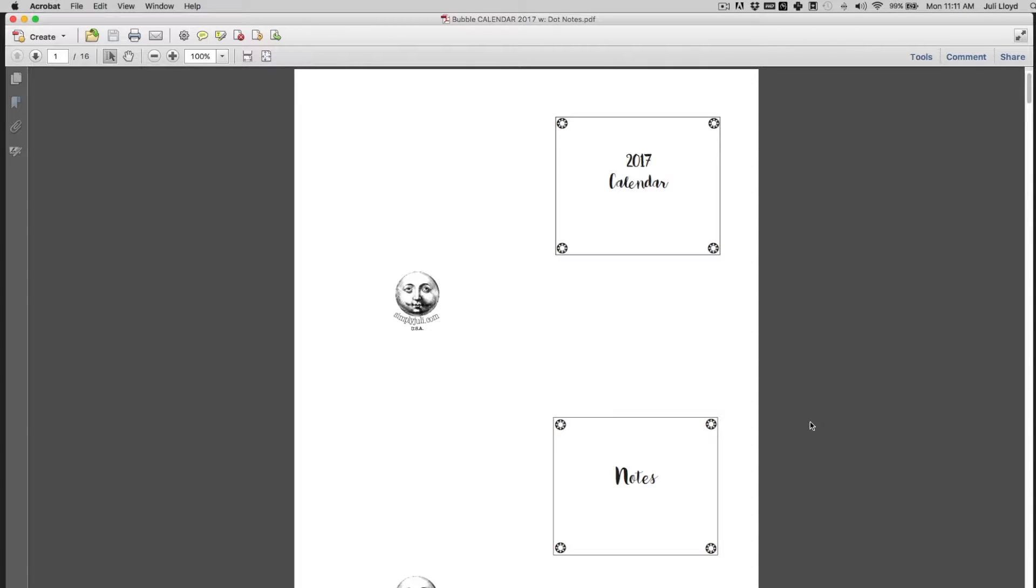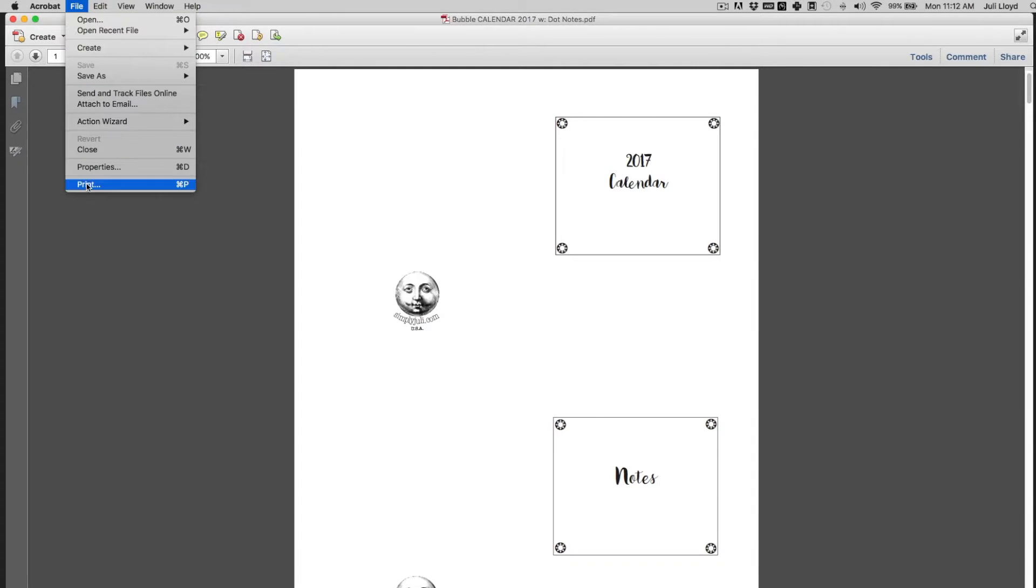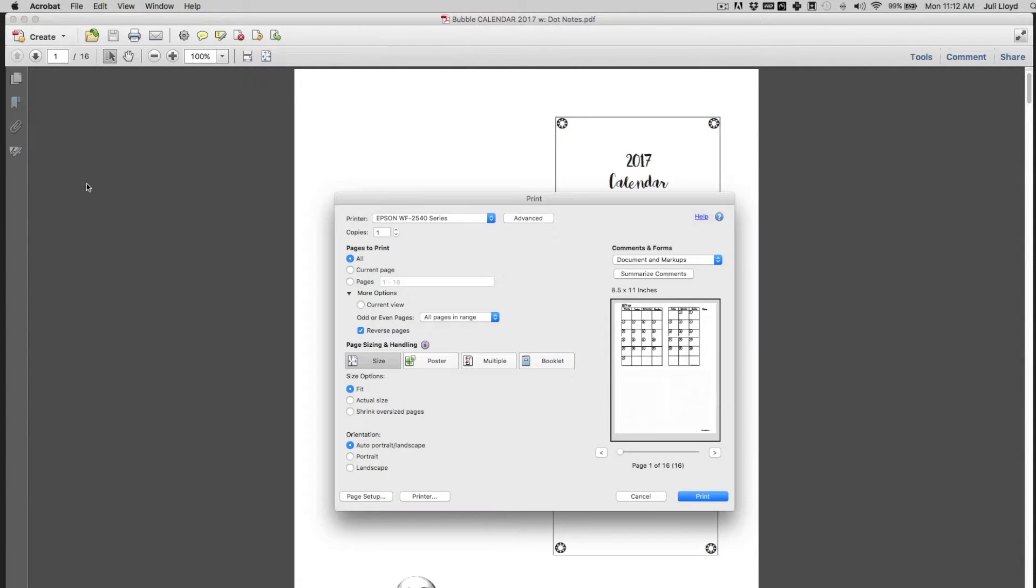Open Adobe Acrobat, go to your print, open the dialog box, and be sure that you choose to print even pages first.